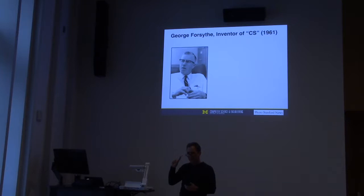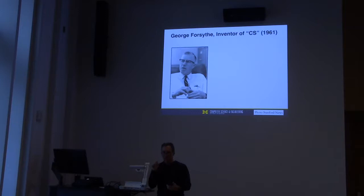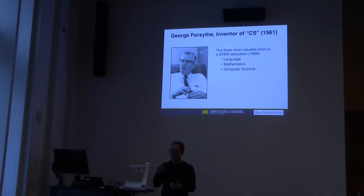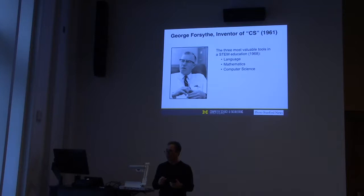This is George Forsythe, a mathematician at Stanford who invented the term 'computer science' in 1961. Interestingly, he first used the term in the Journal of Engineering Education. He explicitly came up with computer science because he saw it as one of the most valuable tools in STEM education — the third leg of STEM literacy. He wrote that the most valuable parts of a STEM education are the general-purpose mental tools which remain serviceable for a lifetime: natural language, mathematics, and computer science as the third.